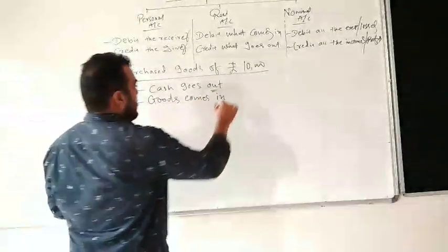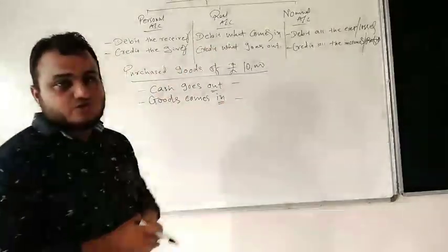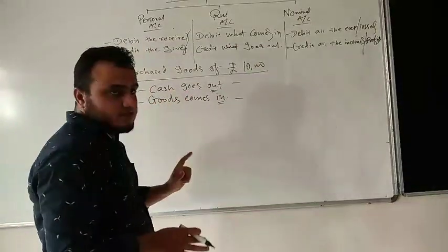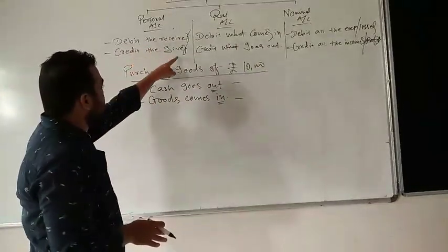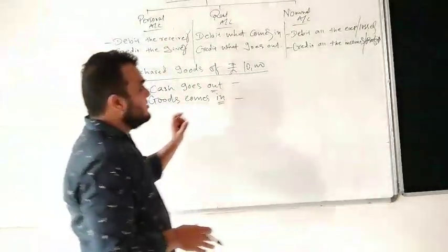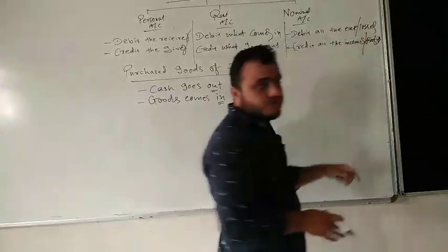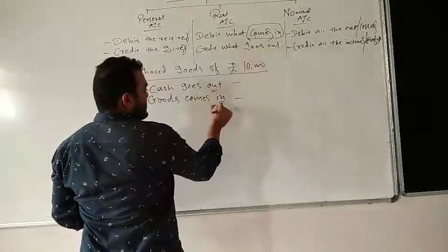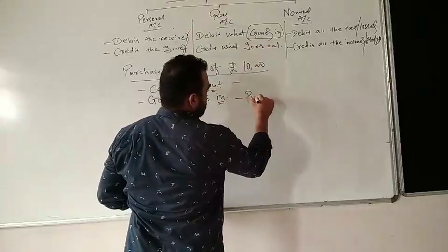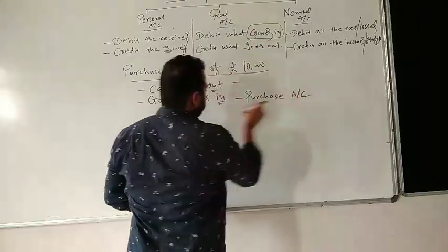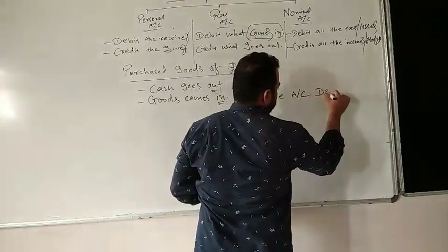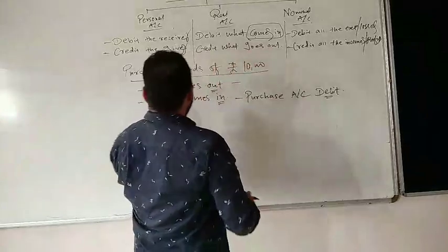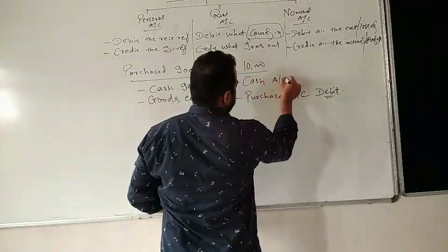Now applying the rules of the three accounts: 'debit the receiver, credit the giver' does not apply here; 'debit all expenses, credit all income' does not apply either. So we use the Real Account rule — debit what comes in. Goods come in, so Purchase Account is debited. Cash goes out, so Cash Account is credited.